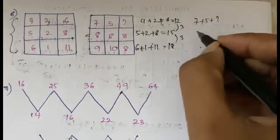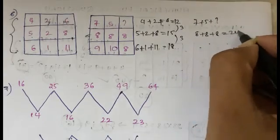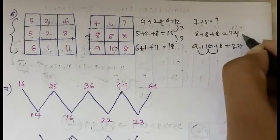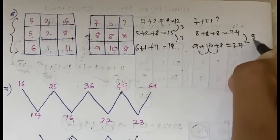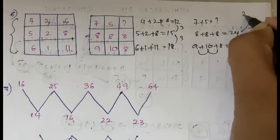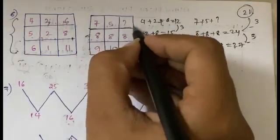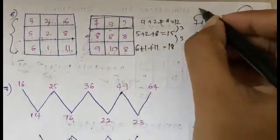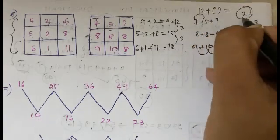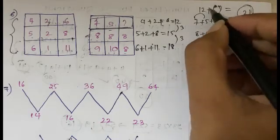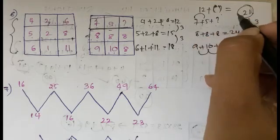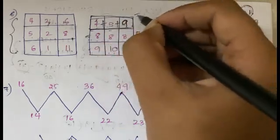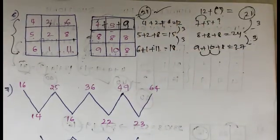So for the unknown row: 7 plus 5 plus something, and we need the row sums to follow the same pattern. 8 plus 8 plus 8 gives 24, and 9 plus 10 plus 8 gives 27. The difference is 3 each time, so 27 minus 3 is 24 and 24 minus 3 gives 21. You already have 7 and 5, so 7 plus 5 is 12. To get 21, you need 21 minus 12 which equals 9. So the answer is 9.